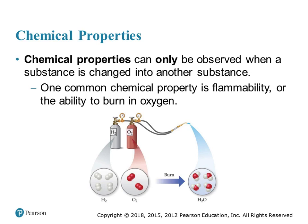Chemical properties can only be observed when a substance is changed into another substance. The way to remember a chemical property is that you cannot get back what you started with — it's completely changed into something else. So if I burn wood, I can't get back my wood, only carbon ash. If I take hydrogen and oxygen and burn it, I make water and can't get back the hydrogen and oxygen gas. Flammability is a chemical property. If I dissolve a piece of metal in acid, it usually bubbles, producing hydrogen gas, and the metal turns into a salt.